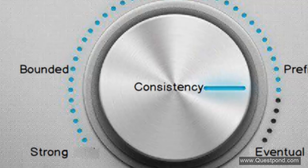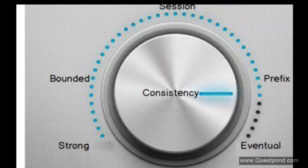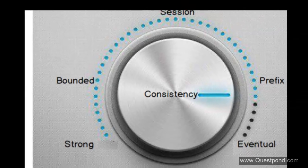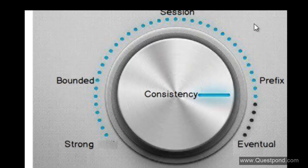Wouldn't it be great if we could have more flexibility to choose between strong and eventual? Between these two extremes, if we can have more choices, that would be great. That is what Azure Cosmos DB has done — between Strong and Eventual they have given you three more choices of consistency: Bounded Staleness, Session Consistency, and Consistent Prefix. Let us understand these three one by one.